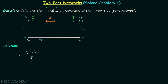divided by impedance z, or we can write current i1 is equal to (1/z) multiplied by v1 minus (1/z) multiplied by v2. Let's say this is equation number one.